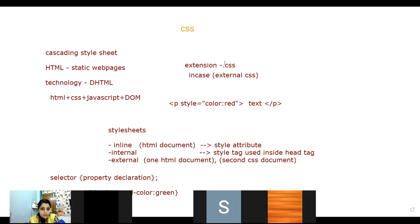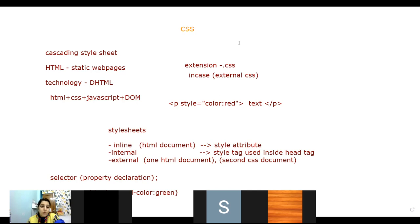For inline CSS, we do not put curly brackets. We are creating an attribute used inside the tag, just like working in simple HTML. Curly brackets are only used when you are using internal or external CSS. If you have two properties in the style attribute, you separate them with a semicolon.